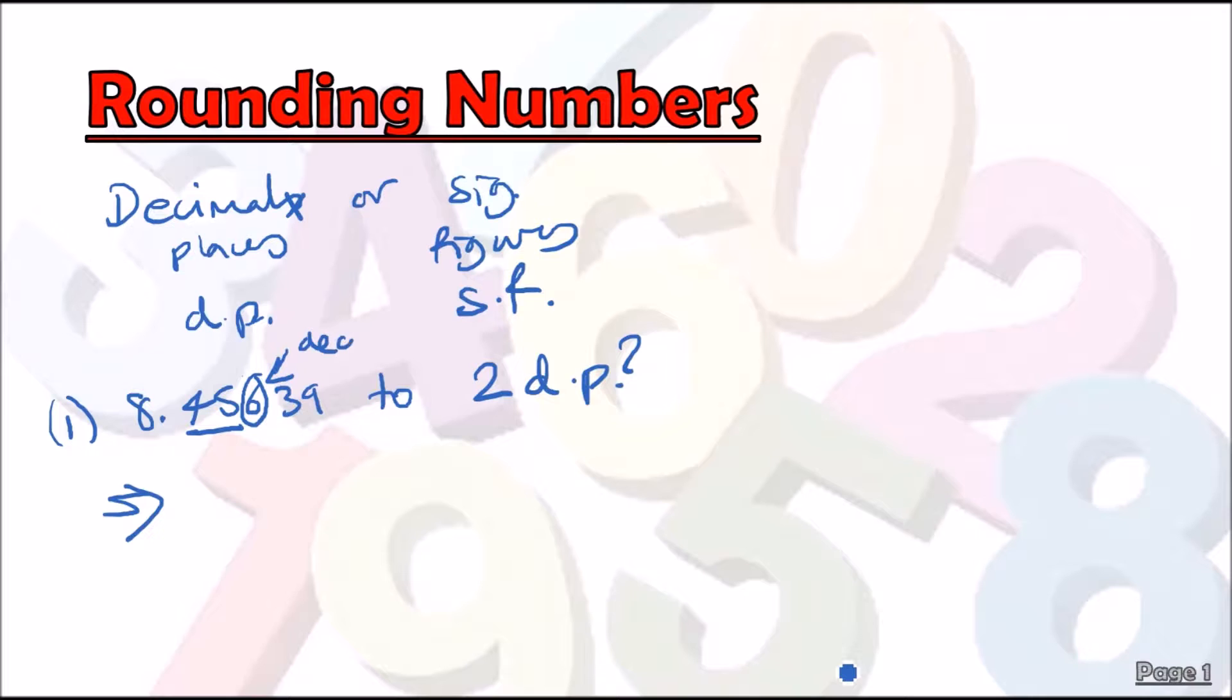Now if the decider is five or bigger, then we round 45 up into the next digit, so this value goes up by one. So 8.45 therefore becomes 8.46, and that's it. This would be to two DP.